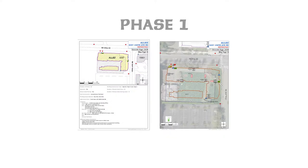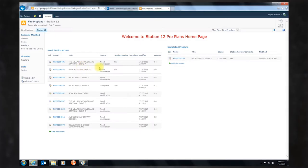The program is going to go in phases. Phase one starts with the Pre-Fire Plans we already have in the system, and your job will be simply to verify the information that has already been gathered. For these Pre-Fire Plans, you'll see the status listed as Needs Verification.